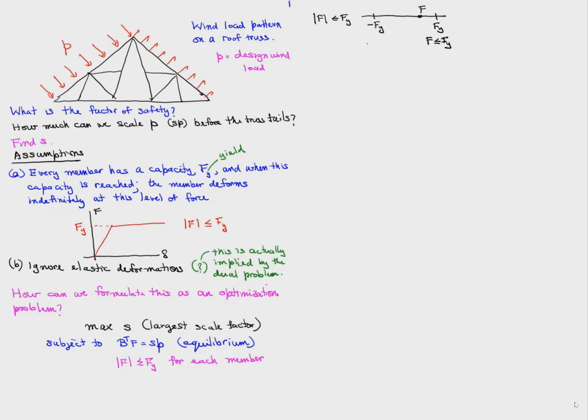So this constraint, absolute value of F less than or equal to Fy, can be visualized in this way and can actually be written as two constraints. That means minus Fy less than or equal to F less than or equal to Fy, which is 1 minus 1 times F less than or equal to Fy.